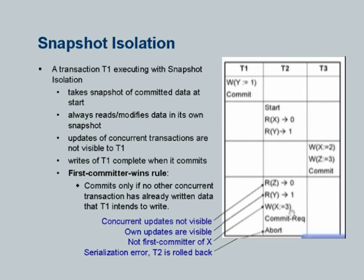Next, T2 writes X. At this point, if you just did plain locking — only for writes — when T3 came in, it got an exclusive lock on X and Z, committed and went away. Now when T2 wants to write X, it requests a lock, nobody else has a lock, it gets it, writes it and goes away. Now something funny has happened: T3 wrote X=2, T2 came and clobbered it — it never saw what T3 did. This particular problem is called the lost update problem. This is one of the known problems if you do not have serializability.